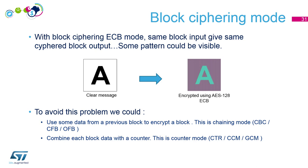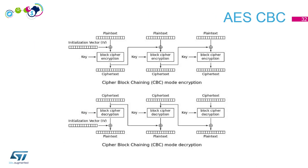GCM will be addressed later; CCM I won't cover. Let's look at AES-CBC. In CBC, the first block of plain text is XORed with an Initialization Vector (IV), then encrypted — this is the first cipher text block. That cipher text block is then used as the input for XORing with the second block of plain text, and so on.